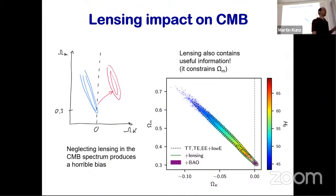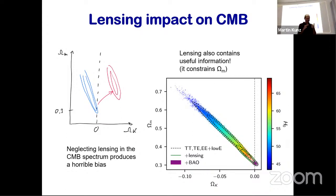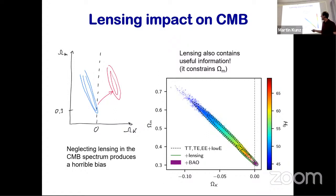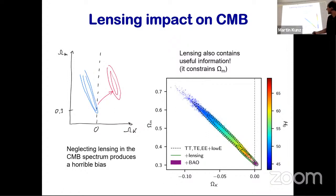For a while I was wondering whether Planck had huge systematic errors, or whether I should call the Nobel Prize committee. But luckily before I did either, I realized that the C_ℓs I got were actually the unlensed C_ℓs — because the lensed C_ℓs are called 'lensed C_ℓs', don't ask me why anyone would do that. The shift was exactly because I had forgotten to include lensing. So if you forget to use lensing in the CMB you're way off — but the lensing signal also helps you.